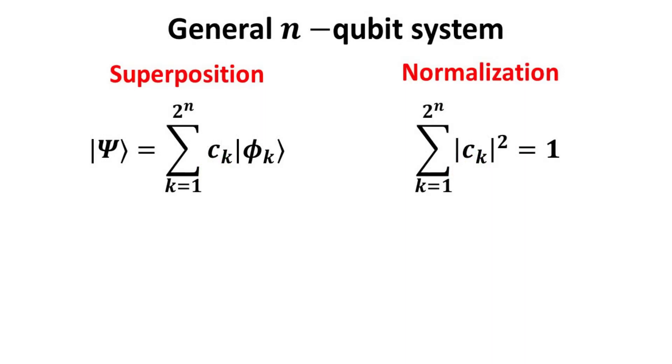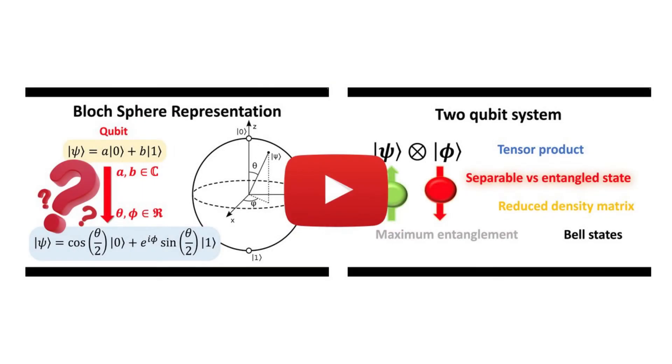In general, if we have an n-qubit system, the most general state will be a superposition of all the 2 to the n basis states with 2 to the n normalized complex coefficients, herein denoted by Ck. The operators that act on this space are represented by 2 to the n by 2 to the n square matrices. We shall refer you to other videos in this playlist which discuss the mathematical representation of single and two-qubit systems in more details.